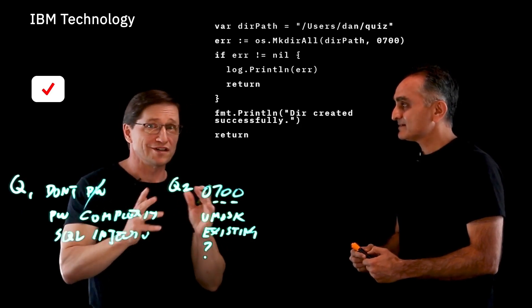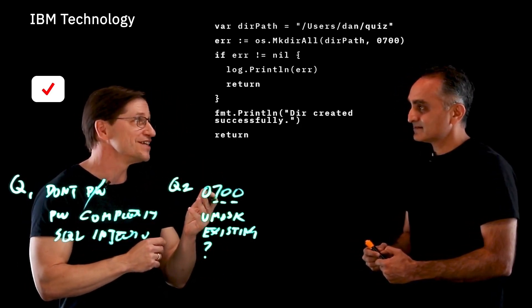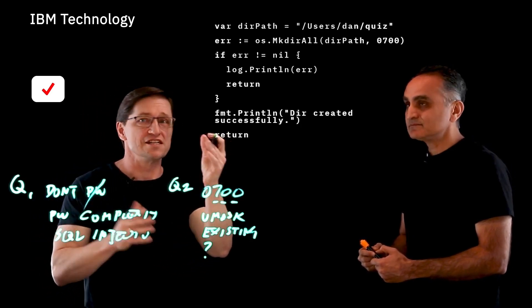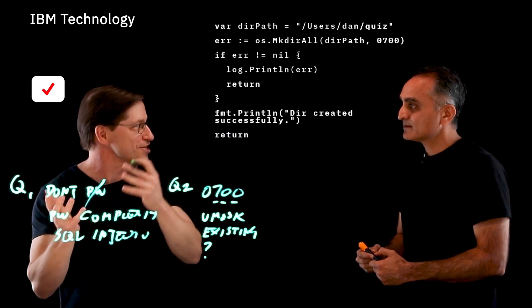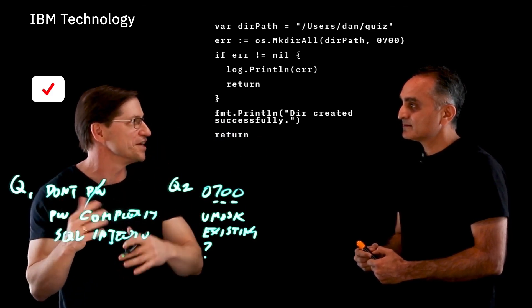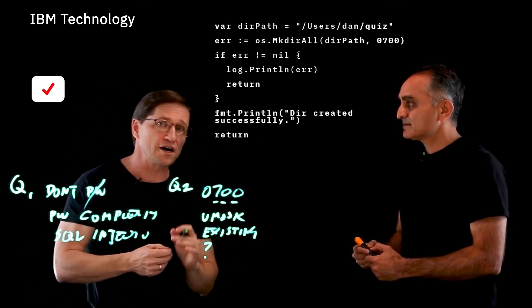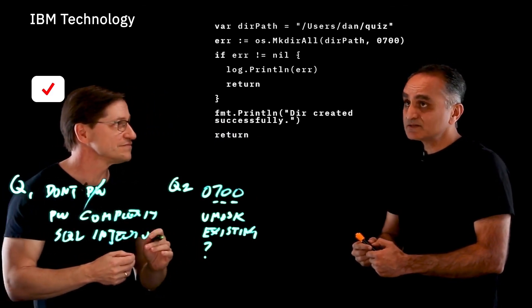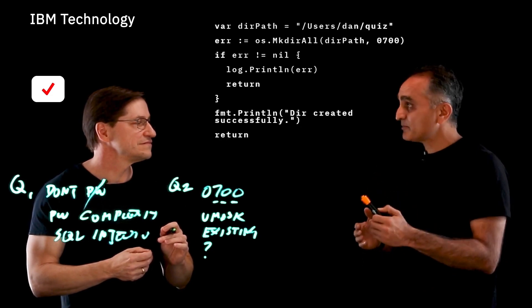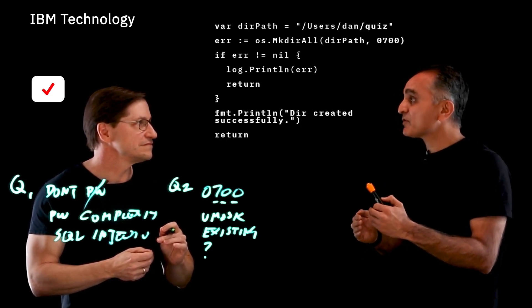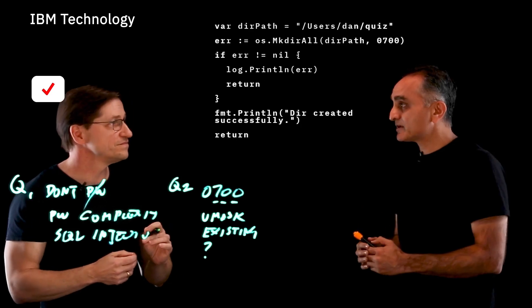When looking through Stack Overflow, there was a big argument about a potential race condition here too — as you check whether an error came back, and then check if it exists, in between someone could have come in and created that file. So for such a small problem, it's really something to look at. This is actually the number one problem in the OWASP Top 10: broken access control.